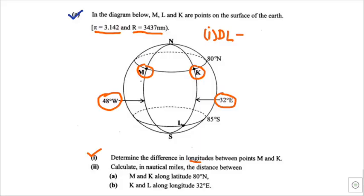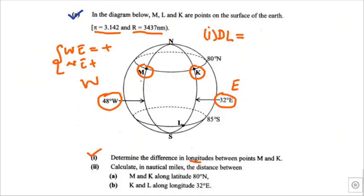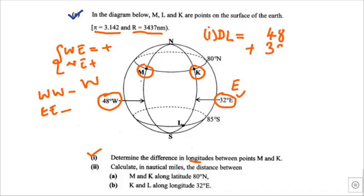The difference in longitude (DL) is equal to: the longitude for M is lying on west, and the longitude for K is lying on east. If you have points in different hemispheres — like west and east — you are supposed to add. But if you have the same hemisphere, like west-west or east-east, you are supposed to subtract. So here, 48 is on west, and we add 32 which is on east.